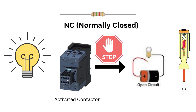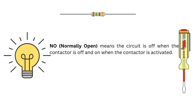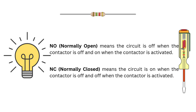So to sum it up: NO, or normally open, means the circuit is off when the contactor is off and on when the contactor is activated. NC, or normally closed, means the circuit is on when the contactor is off and off when the contactor is activated. In other words, with NO you start with an open circuit and current flows when the contactor is energized. With NC, current is already flowing when the contactor is off and it cuts when the contactor is energized.